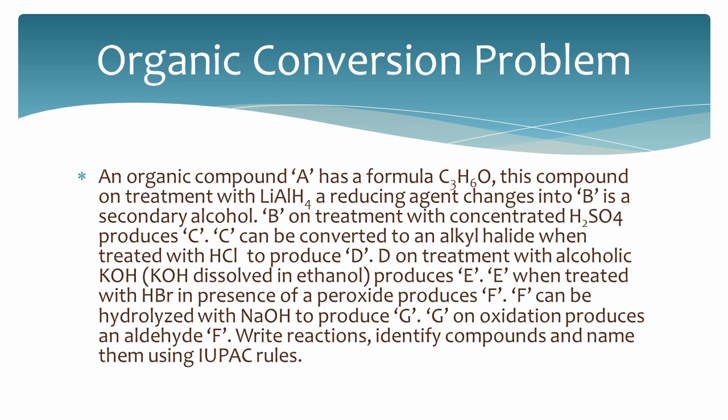B is a secondary alcohol. B when treated with concentrated sulfuric acid produces C. C can be converted to an alkyl halide when treated with hydrochloric acid to produce D. D on treatment with alcoholic potassium hydroxide produces E.